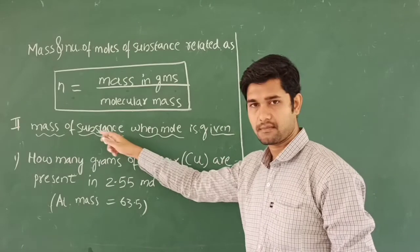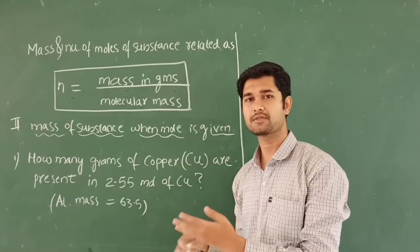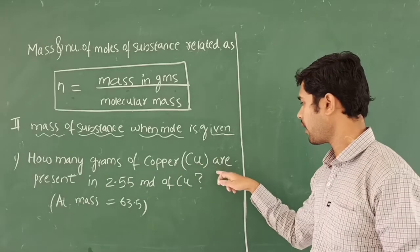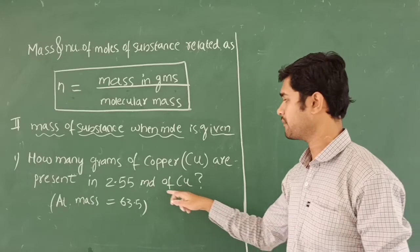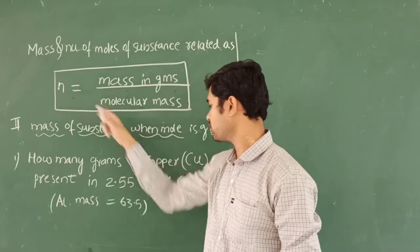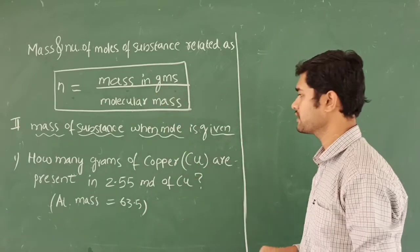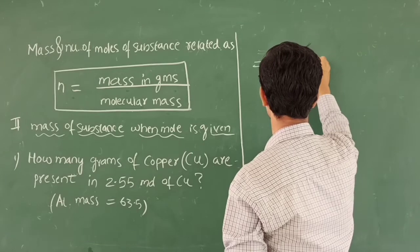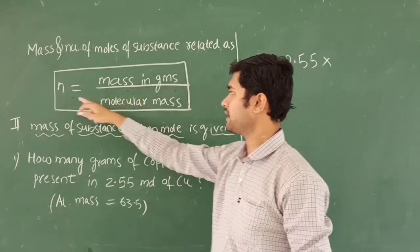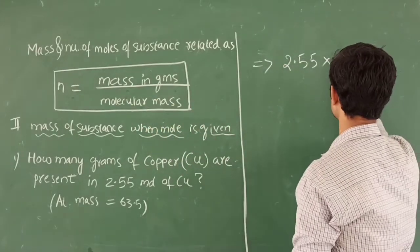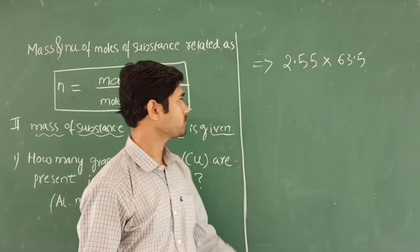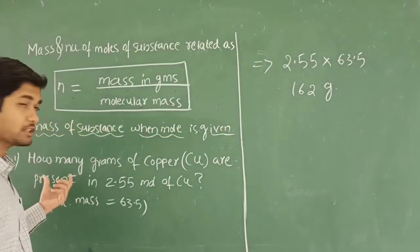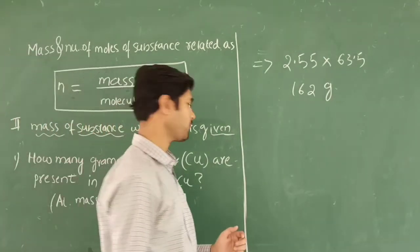Problem 3: How many grams of copper are present in 2.55 moles of copper? Here moles are given and we need to find mass in grams. Using the formula: mass = N × molecular mass = 2.55 × 63.5 = 162 grams. So 162 grams of copper are present in 2.55 moles of copper.